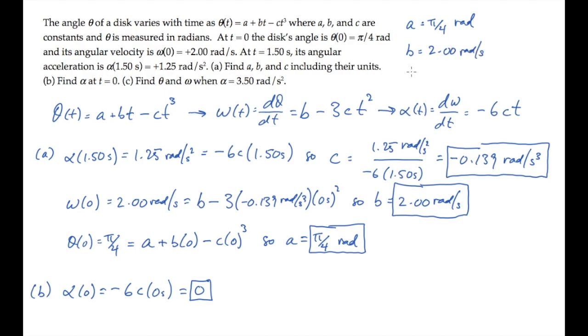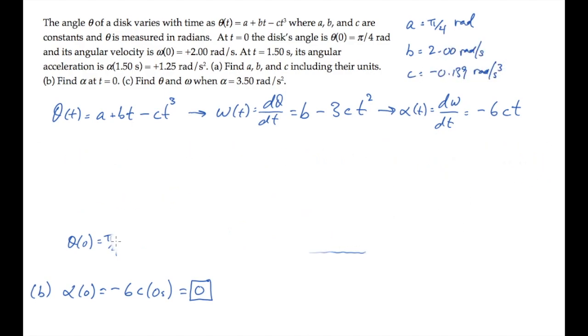Now let's move the values of a, b, and c up here and erase so we have room to solve part c. Here we're asked to find theta and omega, the angular position and velocity, when alpha is three and a half radians per second squared.